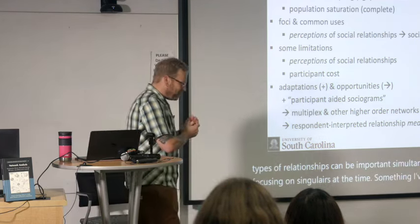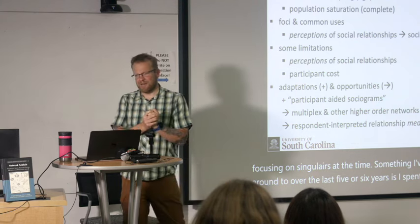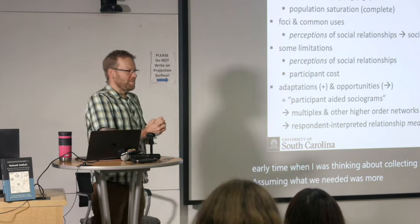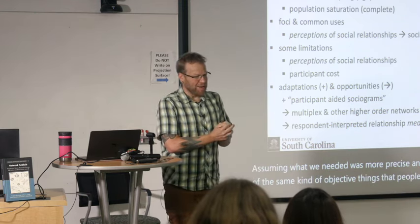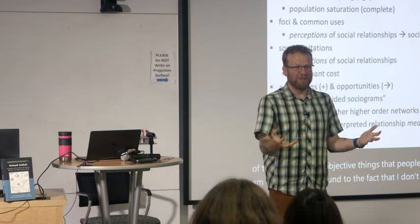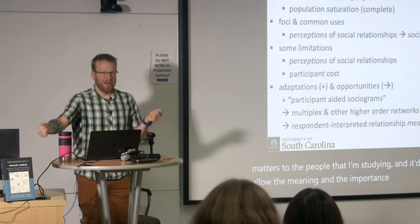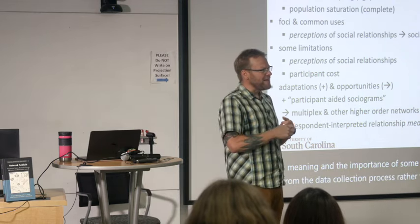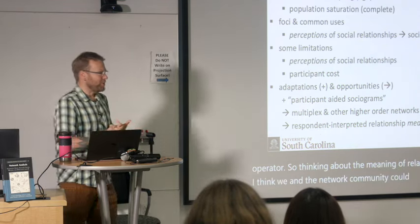Something I've been coming around to over the last five or six years: I spent a lot of early time assuming what we needed was more precise and more reliable measures of objective things people could report. I'm coming more around to the fact that I don't usually know what really matters to the people I'm studying. It would be more useful to allow the meaning and importance of ties to emerge from the data collection process rather than be assumed a priori. Thinking about the meaning of relationships is something the network community could spend considerably more time doing.